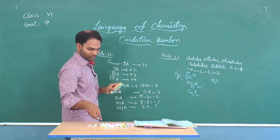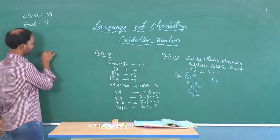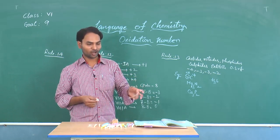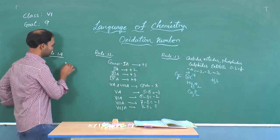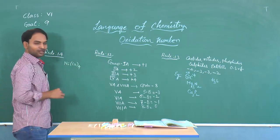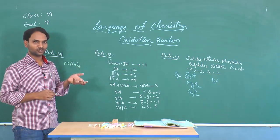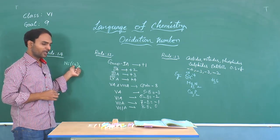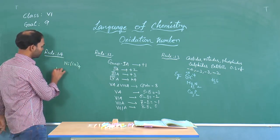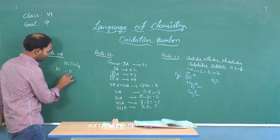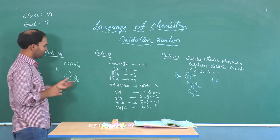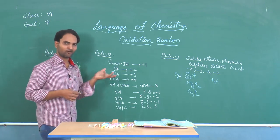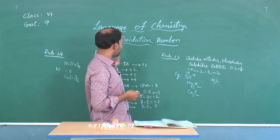Rule 14 is about the oxidation state of metals in metal carbonyls. For example, in nickel carbonyl — Ni(CO)₄ — nickel exhibits an oxidation state of 0. In any compound containing a carbonyl group, the corresponding metal will exhibit 0 oxidation state. This is what rule 14 states.